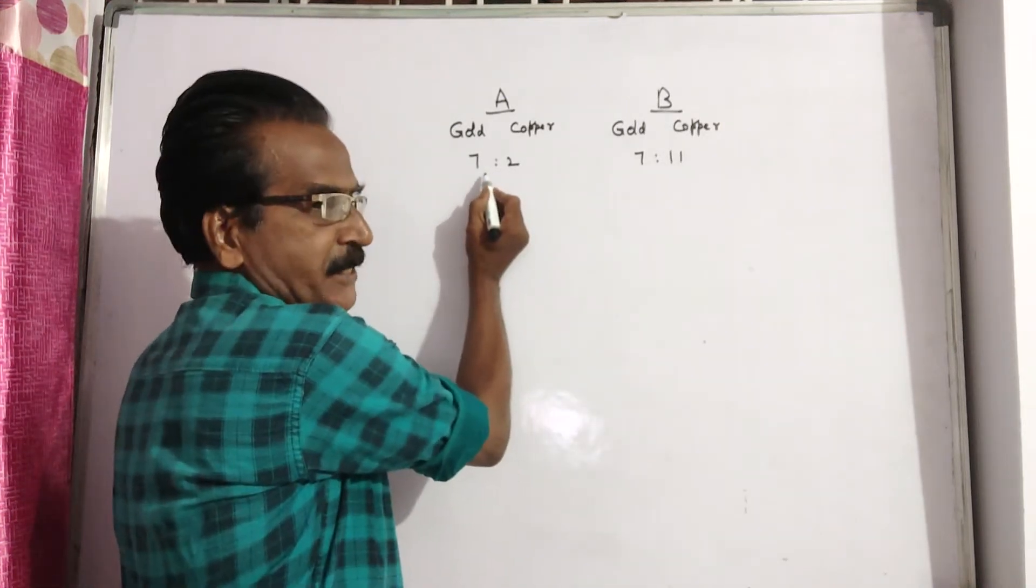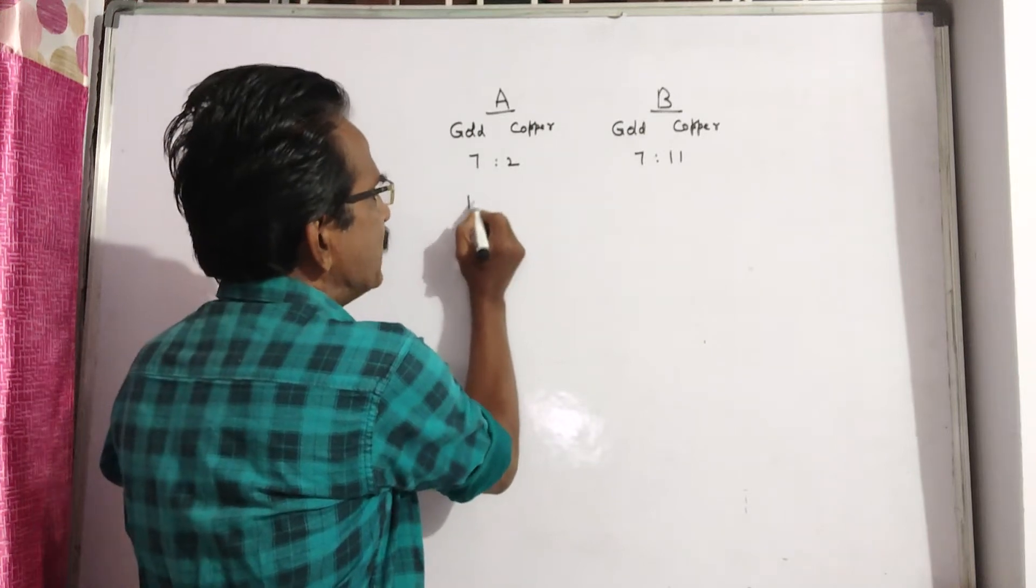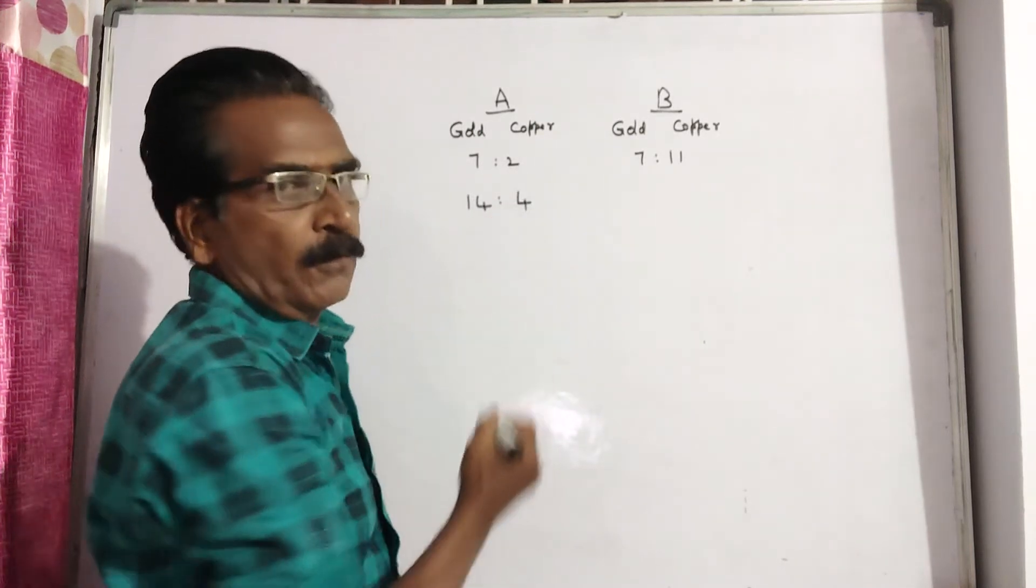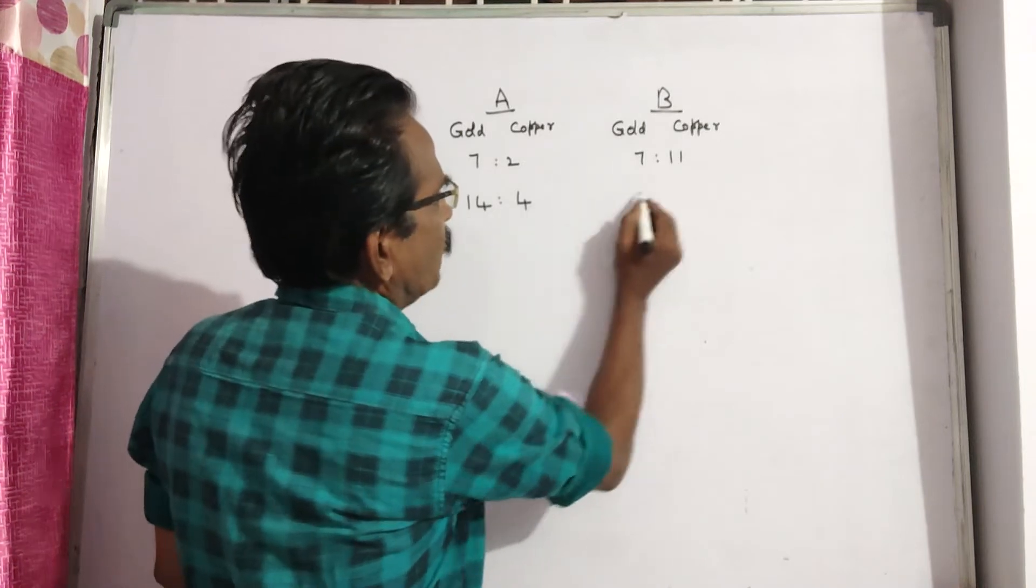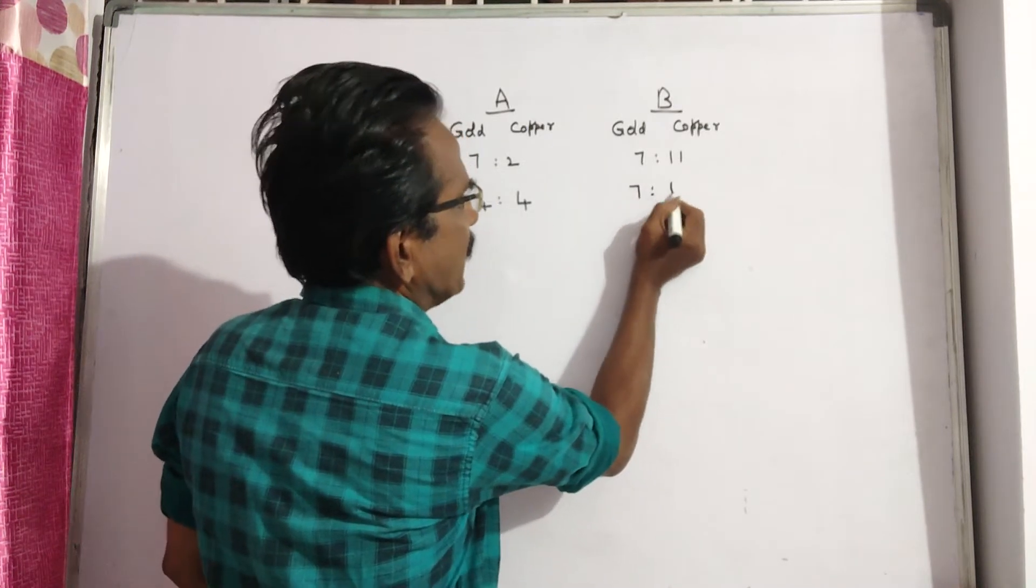I am multiplying this ratio by 2. 2 times 7 is 14 to 2 times 2 is 4. 14 plus 4 is 18, 7 plus 11 is 18.